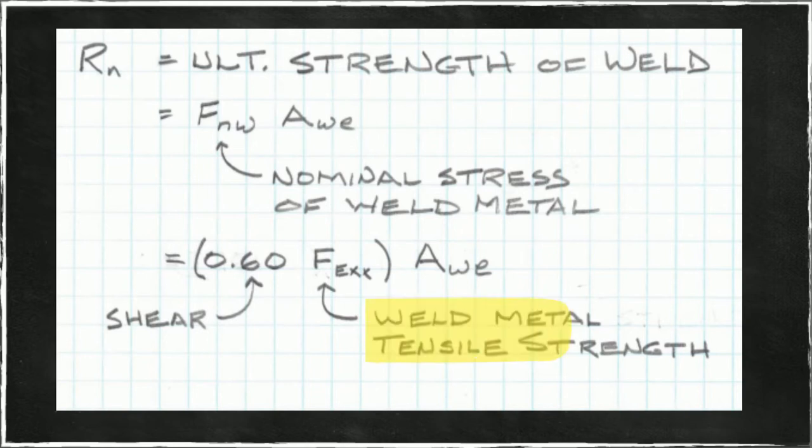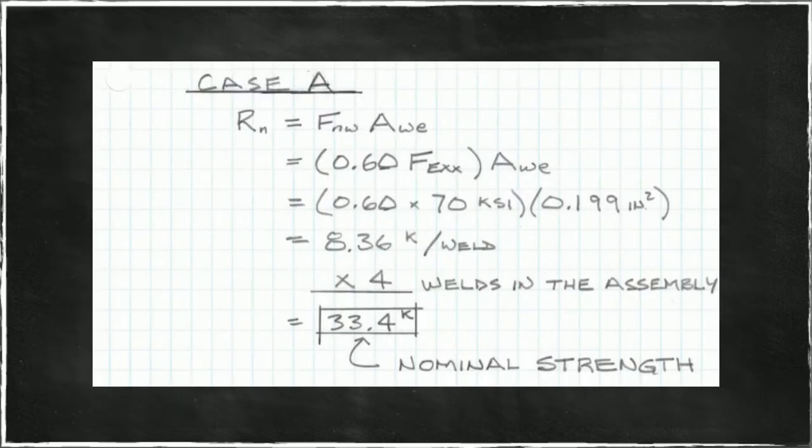And the nominal stress of the weld metal is the weld metal tensile strength. In our case this will be 70 KSI and we'll reduce this by a factor of 0.6 to account for shear because we're not going to be loading the weld metal in tension, we will be loading it in shear. So there's our nominal stress times our effective weld area. The nominal strength or ultimate strength will be the terms just mentioned, the 0.6 for shear times the tensile strength of the weld metal times the effective weld area. We plug all our numbers in and we get 8.36 kips per weld. And of course there are four such welds in the assembly so we multiply by four and we get a nominal strength for our assembly for the welds of 33.4 kips.